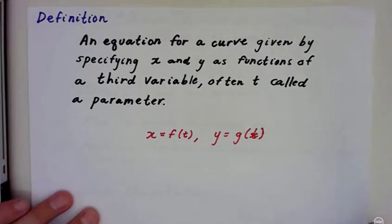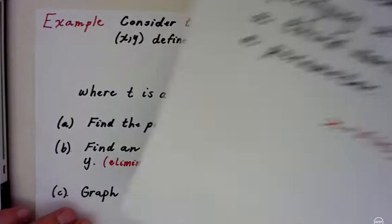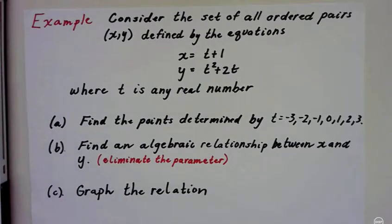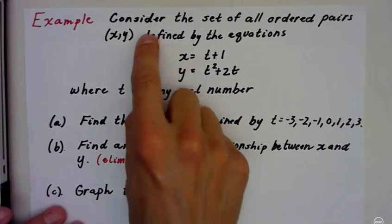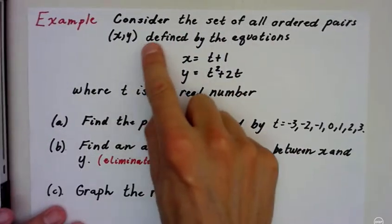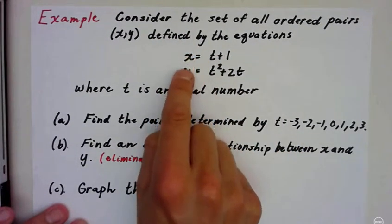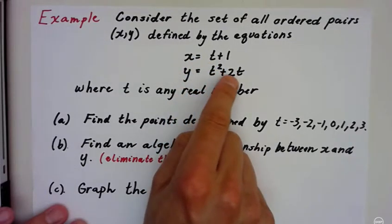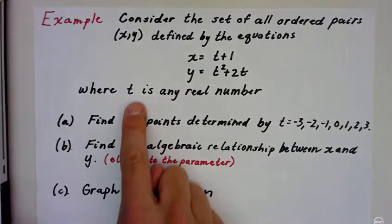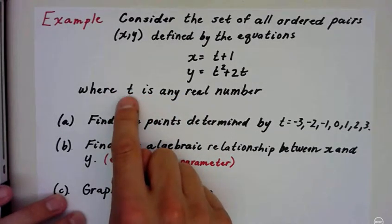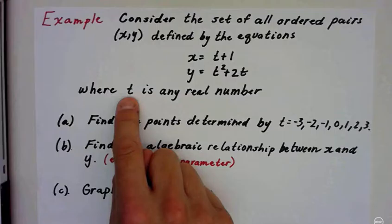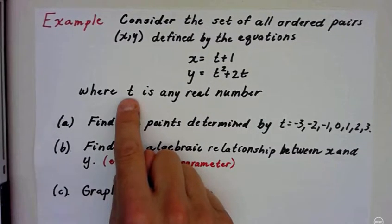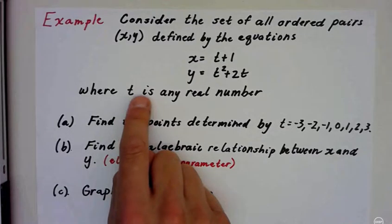So it's a lot easier when we look at an example to see what they mean. Here's an example right out of your text that we're going to do today. Consider the set of all ordered pairs x and y defined by these equations. Here's your parametric equations: x is equal to t plus 1, y is equal to t squared plus 2t. Now t is any real number. A lot of times you see t for parametric equations as being time. In this case it's not, so you can use negative numbers. That's really important to realize there.